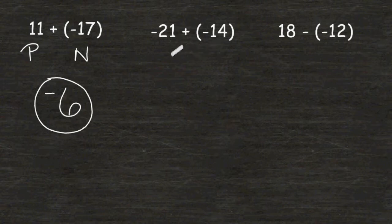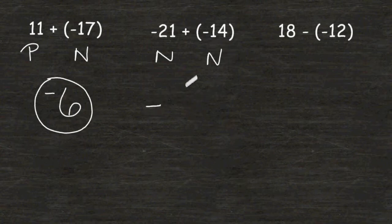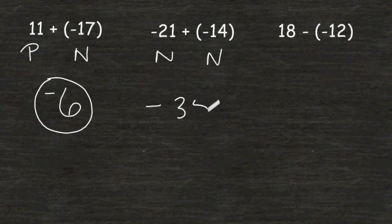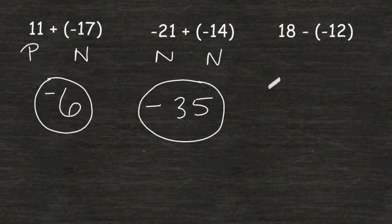Now for these two numbers, the signs are both negative, meaning our answer must be negative. And when the signs are the same, we have to find the sum of the absolute values. 21 plus 14 is equal to 35. So negative 21 and negative 14 have a sum of negative 35.